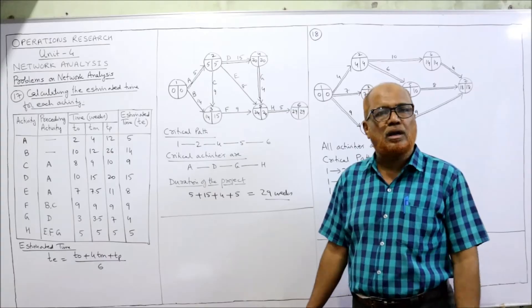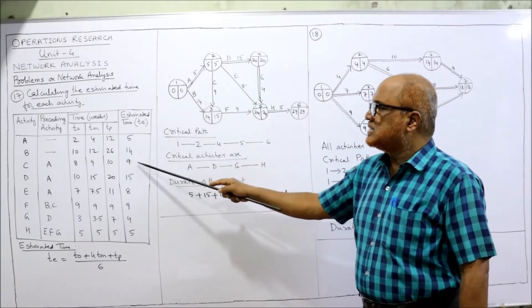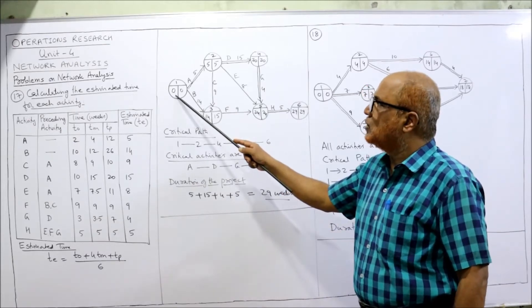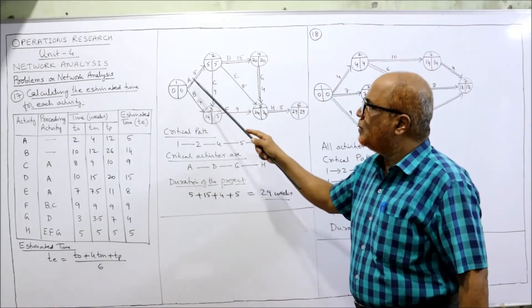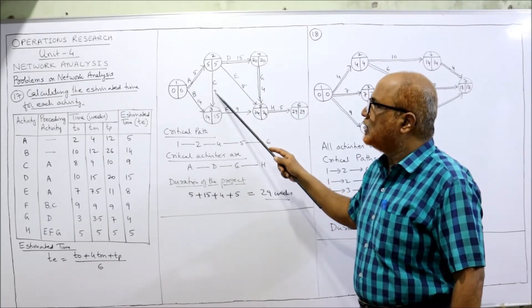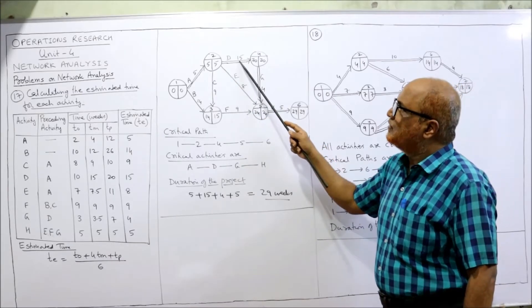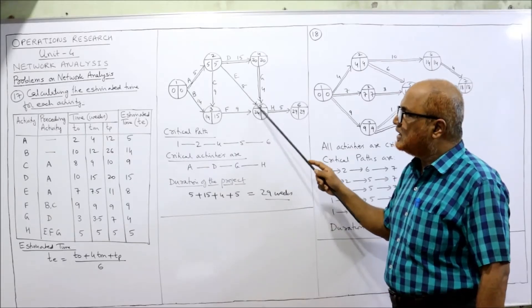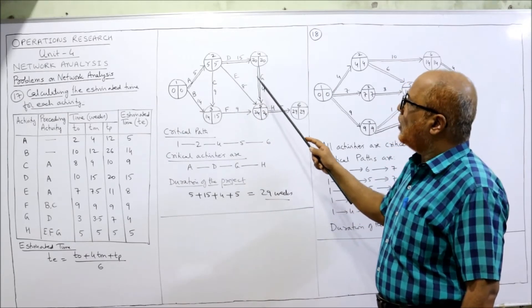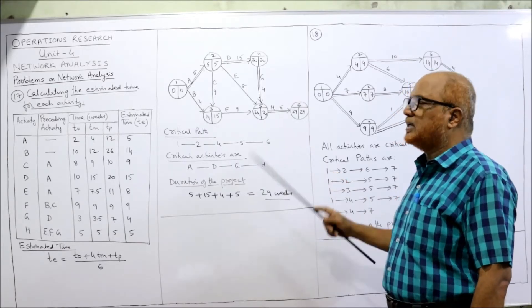Take the estimated time for each activity: A = 5, B = 14, C = 9, and so on. For the EST forward pass, the first EST is 0. Adding 0 + 5 = 5. Where two activities merge, take the maximum: 5 + 9 = 14 or 0 + 14 = 14, so 14. Then 5 + 15 = 20. Where three activities merge, take the maximum: 14 + 9 = 23, 5 + 8 = 13, 20 + 4 = 24 — so 24 is highest.